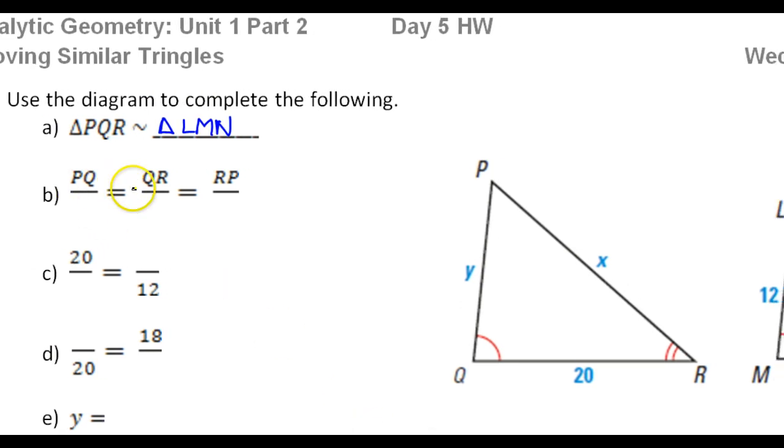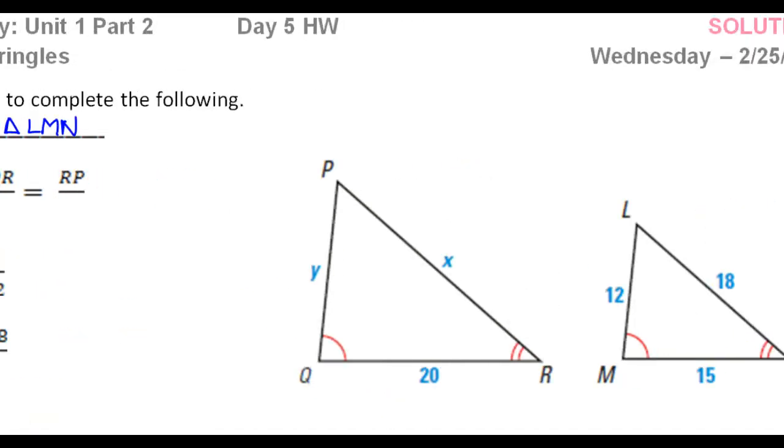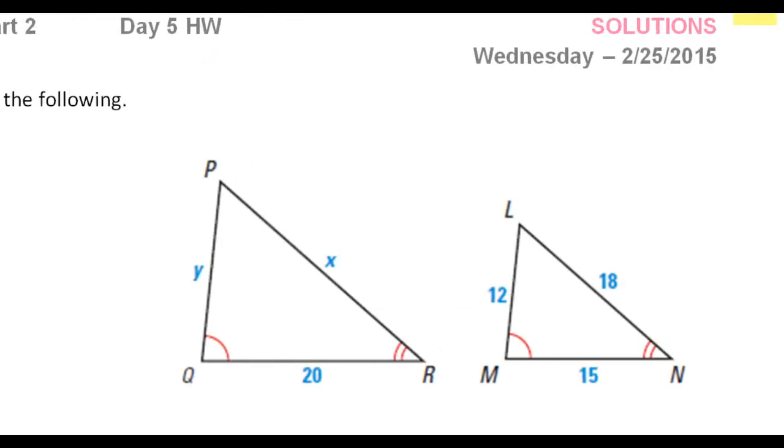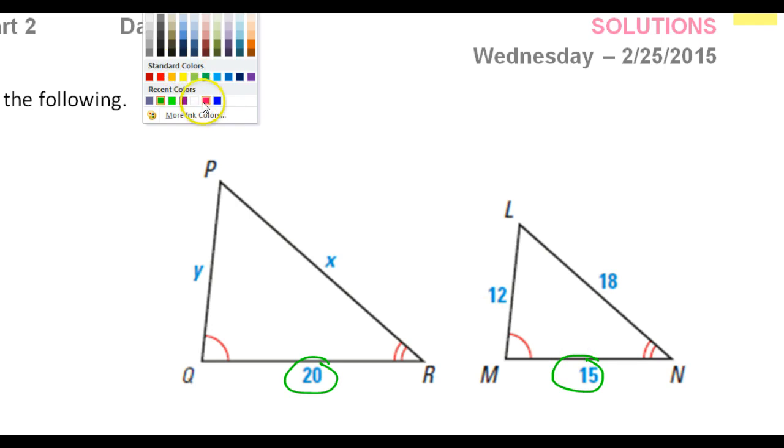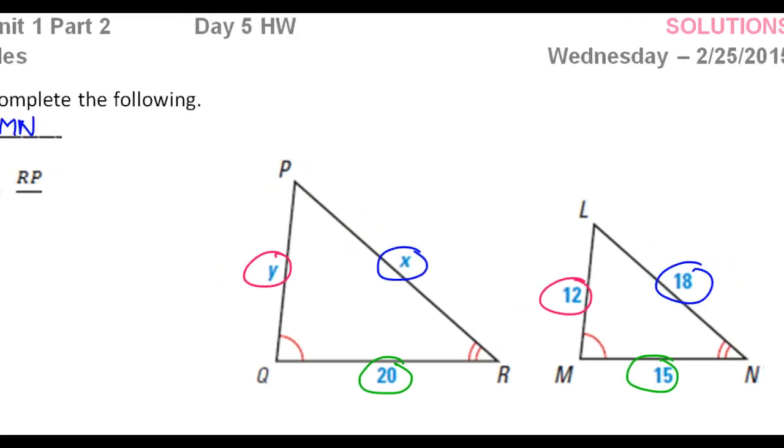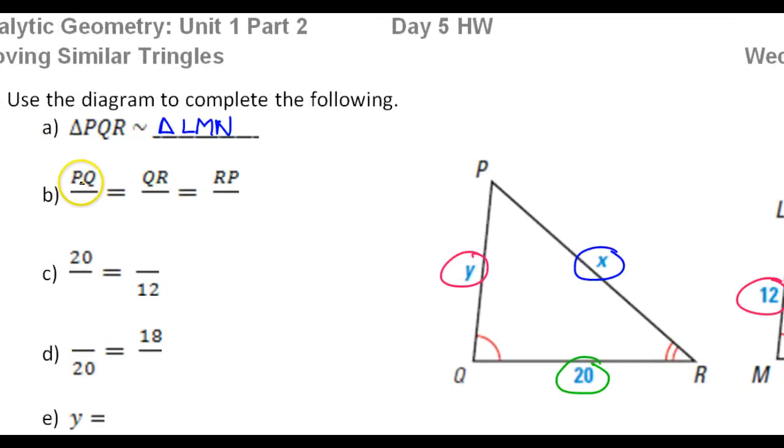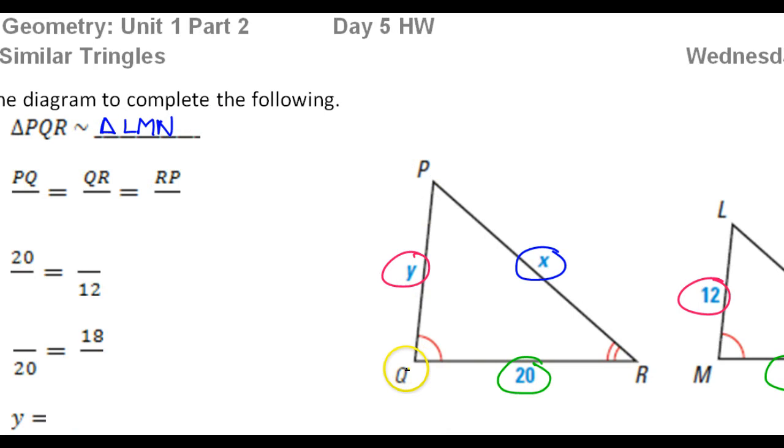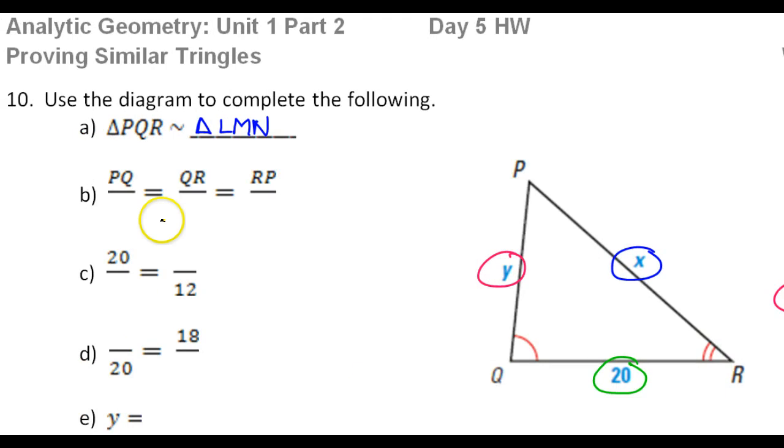Now how about the statement of proportionality? I like to use colors a lot. So the greens here are corresponding, and the pinks here are corresponding, and the blues are corresponding. So when I say P, Q, we're talking pinks, right? So P, Q goes with L, M. So there we go, L, M. Q, R goes with M, N.